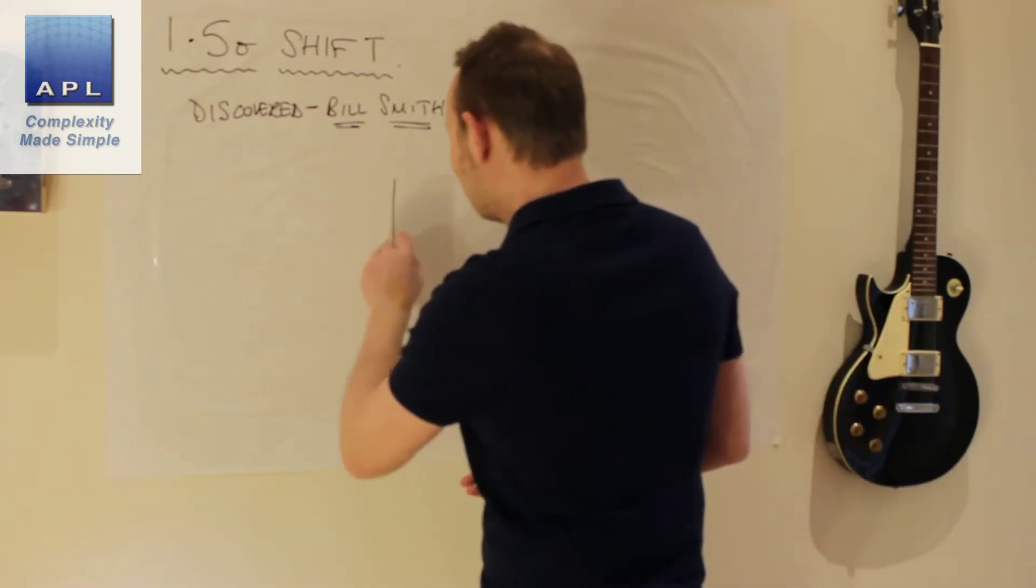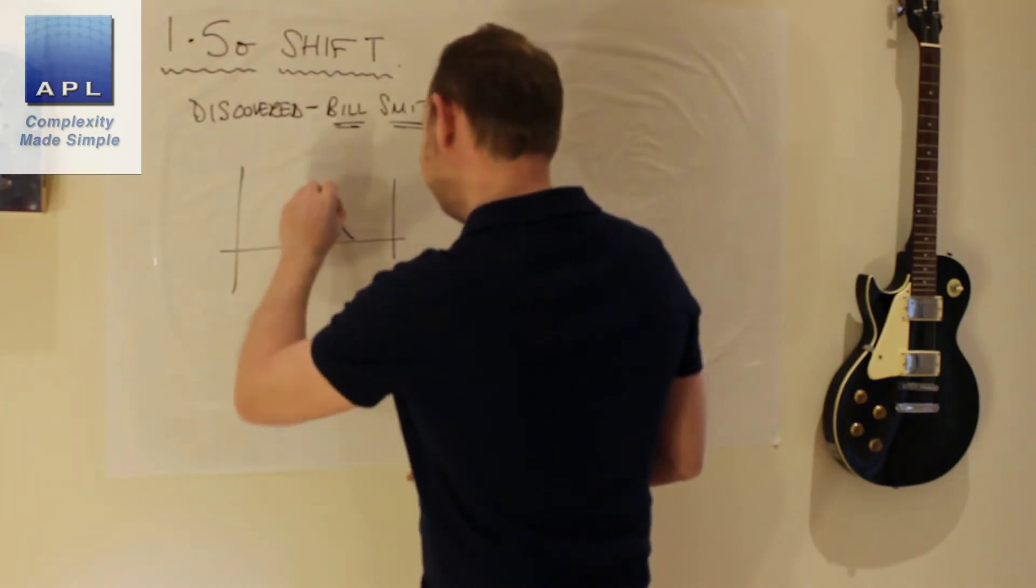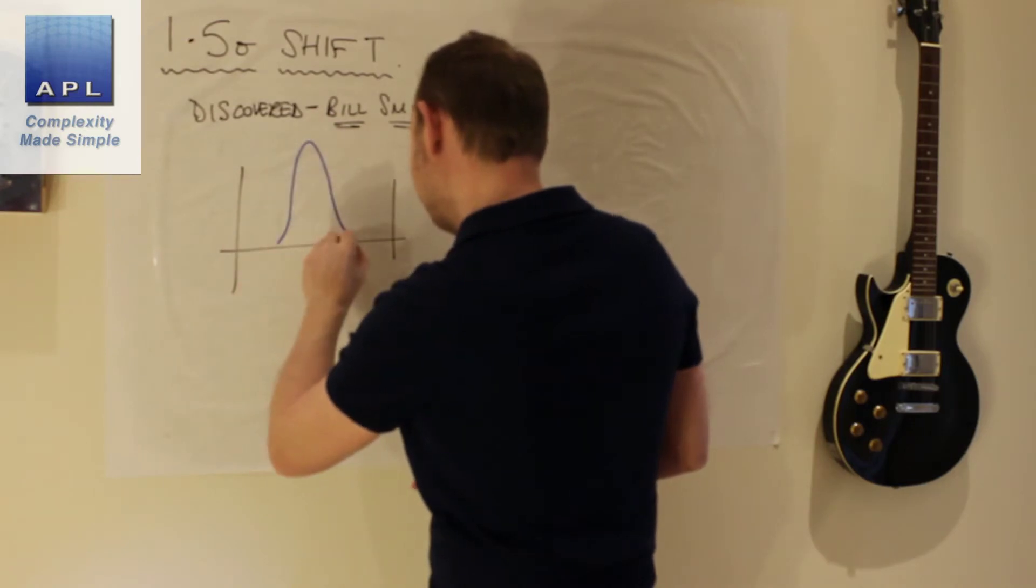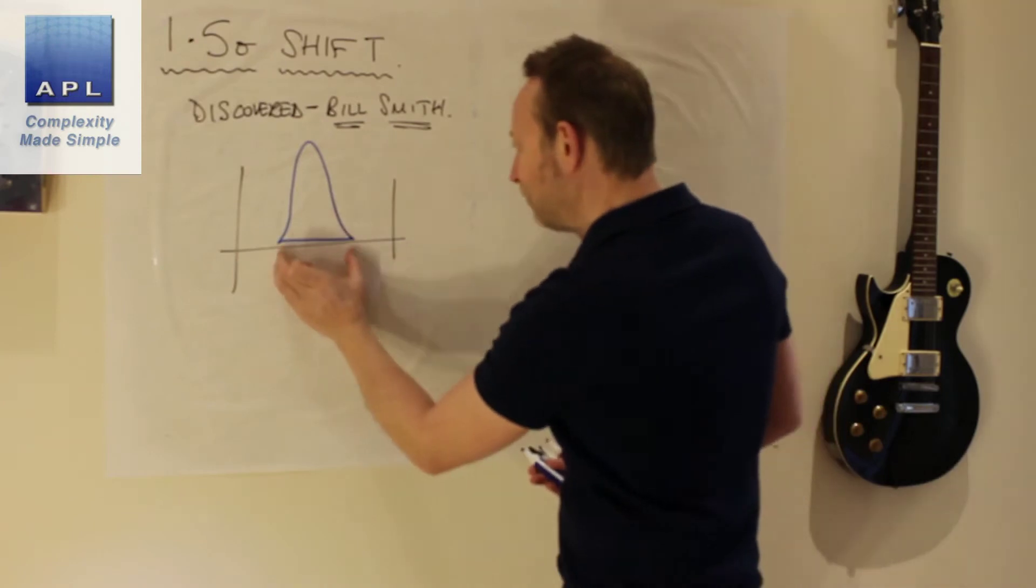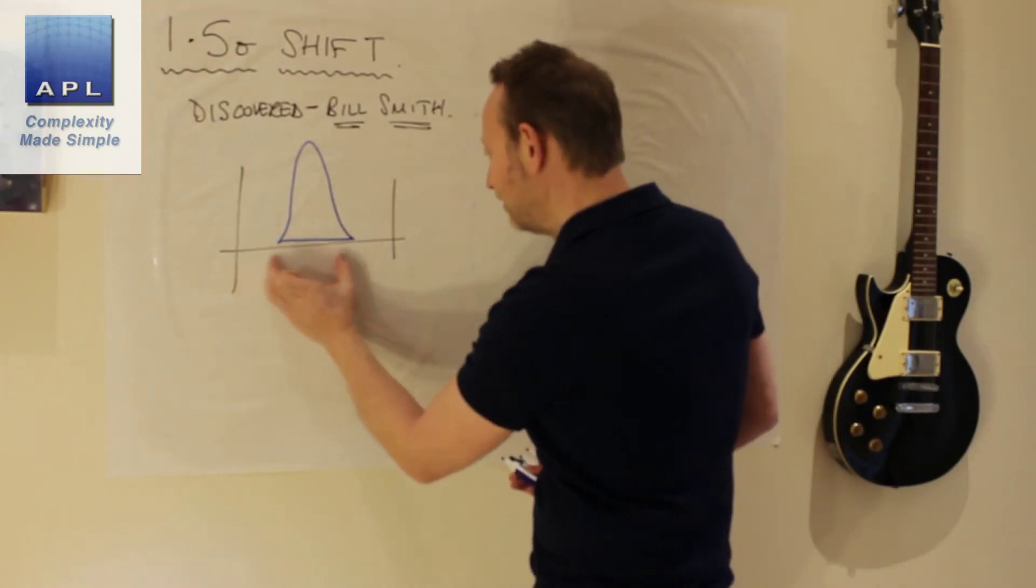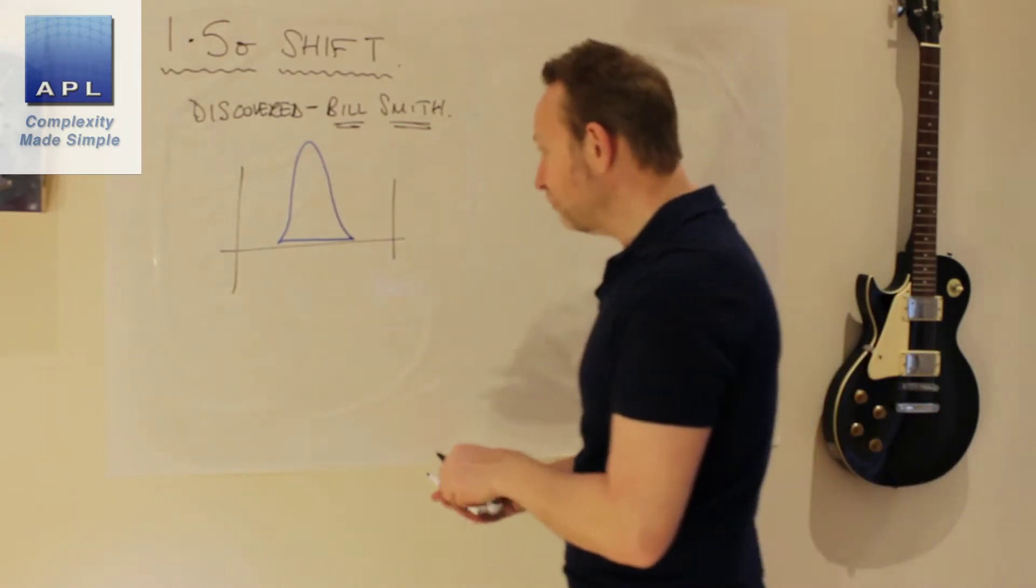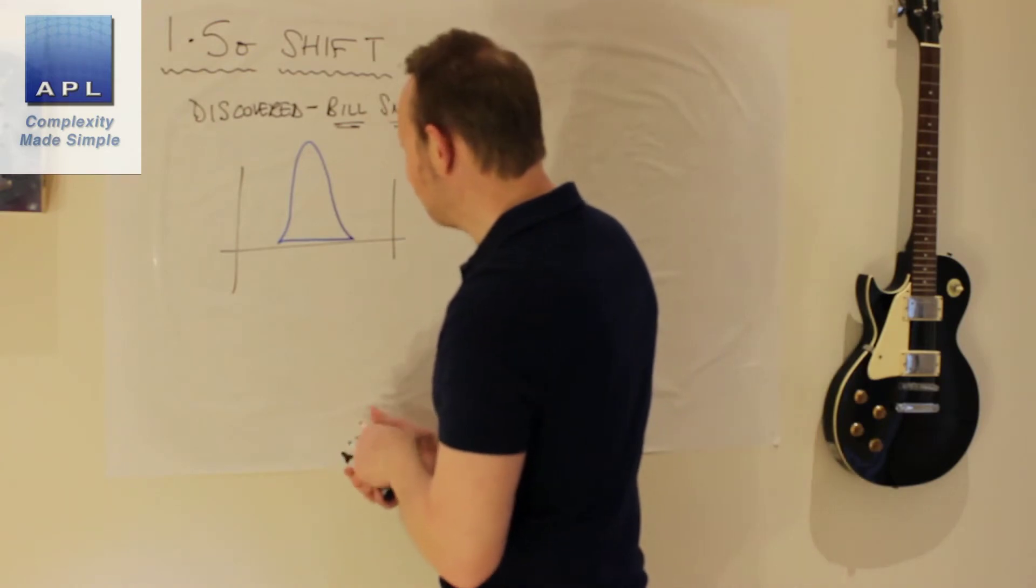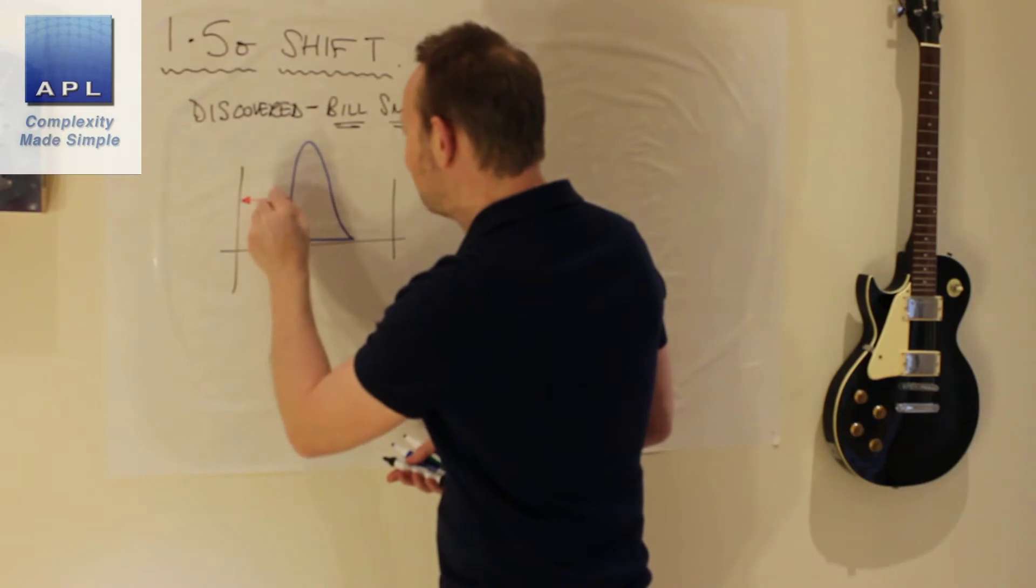Let's just draw the distribution, a 6 Sigma process. It's going to look something like that. Typically a 6 Sigma process can fit twice inside the tolerance. Why do you want so much room? Because that's essentially what we've got here. When we have a 6 Sigma process, we have room.